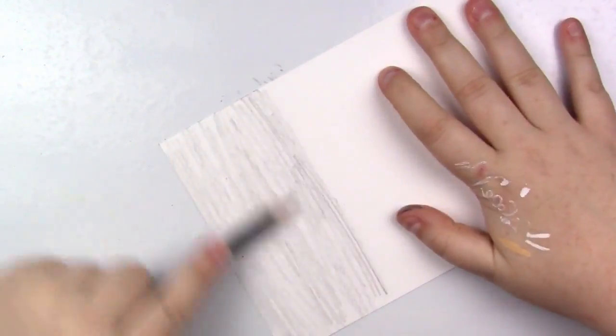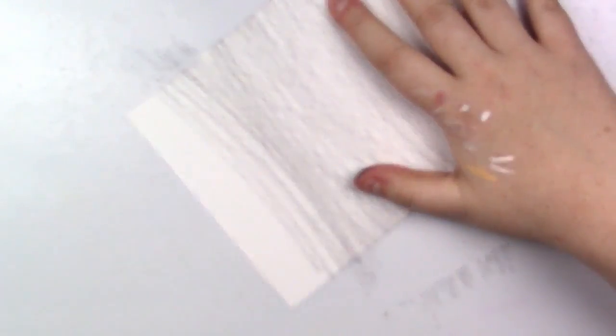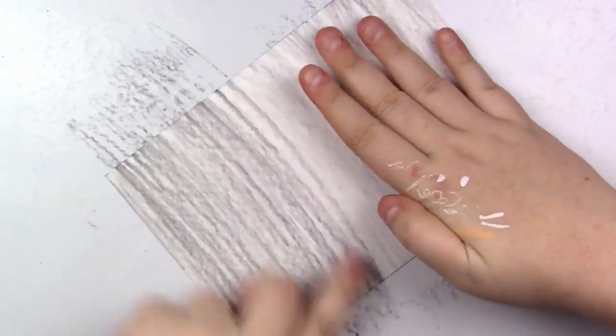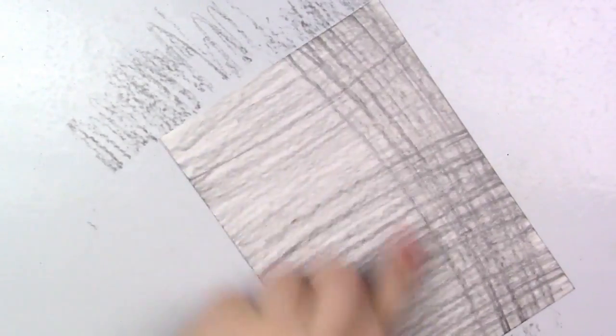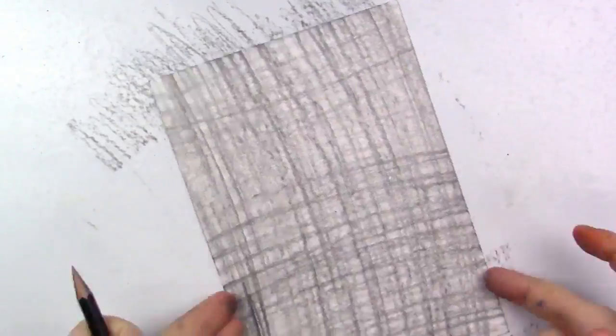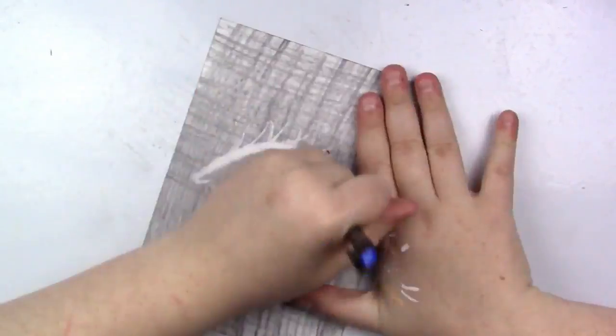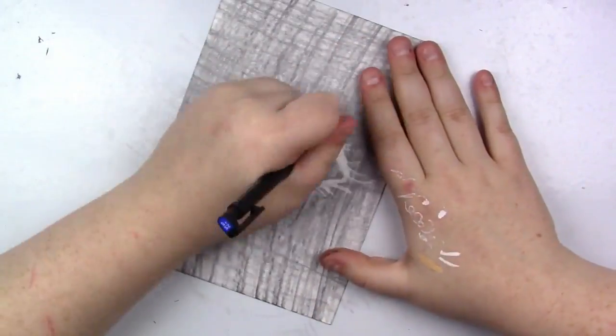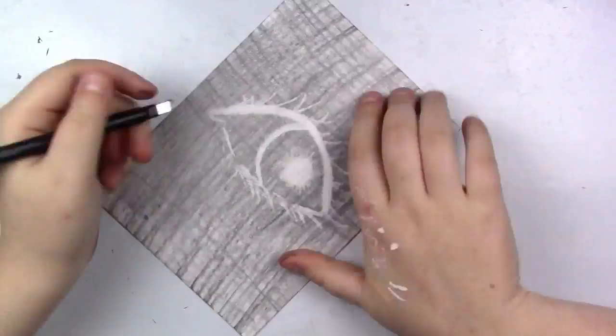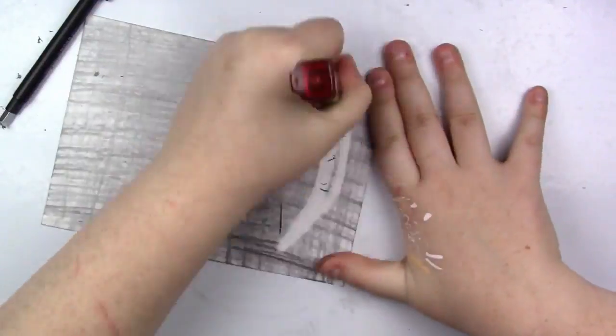So with doing the only eraser challenge, of course I couldn't just do only an eraser because you can't erase something from nothing. So what I figured I would do is like I mentioned at the beginning of the video, I would scribble a pencil onto some paper and then erase from there. Well, my first attempt at this, you'll see, isn't so great.